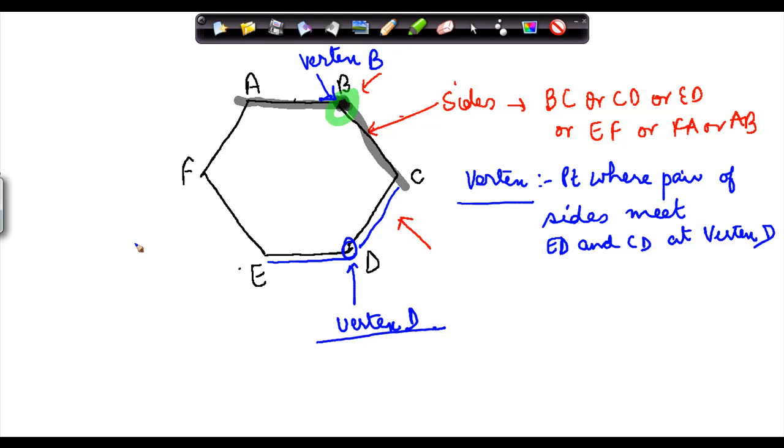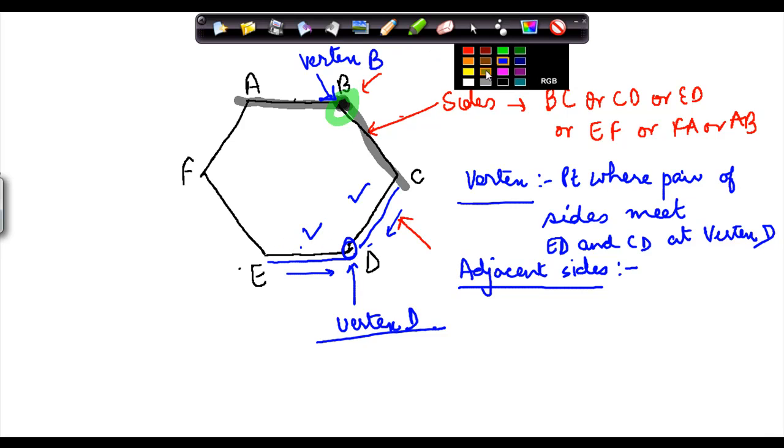Now any two sides which are following in continuity, say ED and CD, are called the adjacent sides. Adjacent—you know how often does your ma'am say, okay, go and sit adjacent to this person, which means by the side. So similarly, ED and CD are adjacent sides. Then your ED and EF are also adjacent sides, and so on.